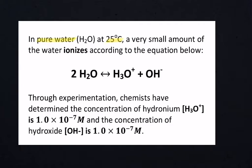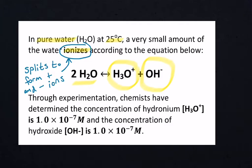In pure water (H2O) at 25 degrees Celsius, a very small amount of water ionizes according to the equation below. When something ionizes, it splits to form a positive and a negative ion. H2O splits apart—one of the H's attaches to an H2O, becomes H3O+ (hydronium ion), and one of those waters loses an H to become OH- (hydroxide ion).